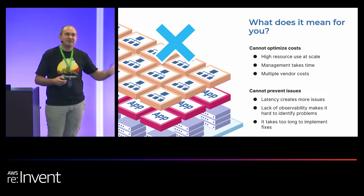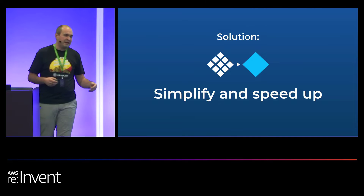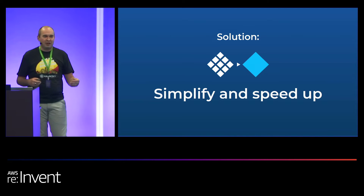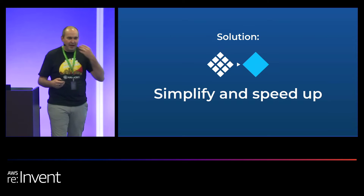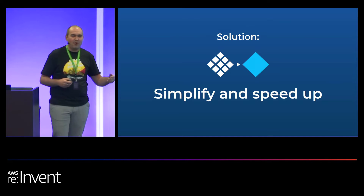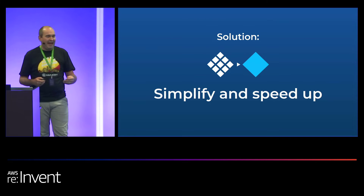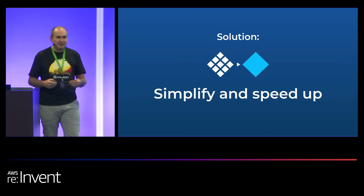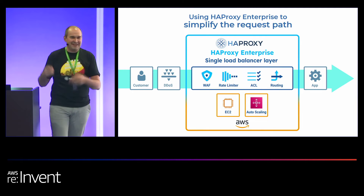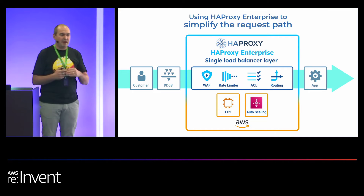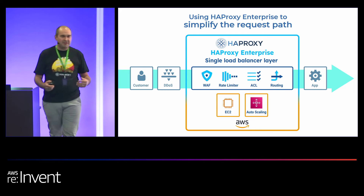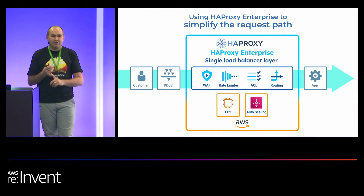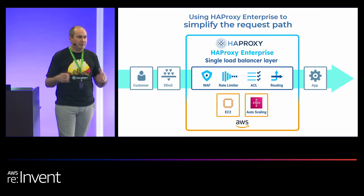We need to solve that, and we're going to solve it with HAProxy through simplification and ultimately speeding up. I have a friend who used to say nothing is more complicated to scale than complexity, and to scale you need to very often simplify. What we're going to do is collapse the entire request path by using HAProxy as a load balancer — creating a single layer of load balancing where we add all of the routing, all of the access control lists, all of the rate limiting, all of the web application firewall, and everything else, running across all of your regions.